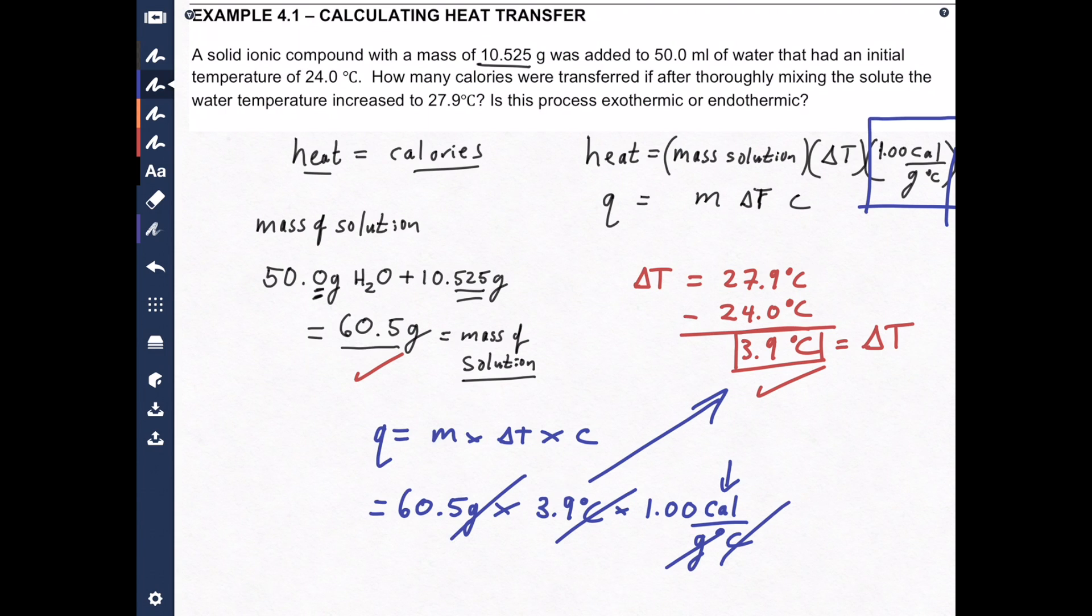And then of course multiply it by 1, the calculator says 235.95 calories. We have to round it, so there's 3 sig figs here, 2 sig figs there, and 3 sig figs here. So we have to round it to 2 significant figures. So that is going to be 240 calories. There's my final rounded answer.